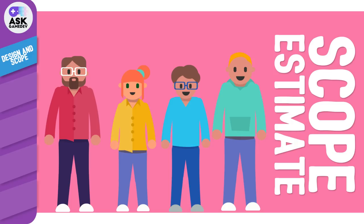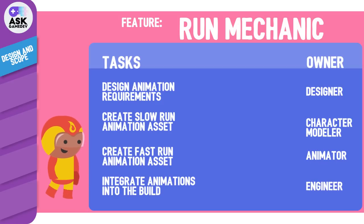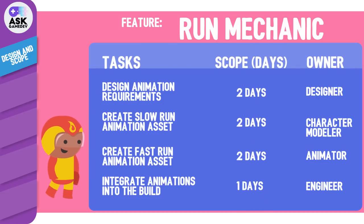For example, let's consider a hypothetical run mechanic for a character. A designer, a character modeler, an animator, and an engineer may all be required to help get the character to run in engine, and we would make estimates for each discipline's participation in man days. Estimates are a best guess and are often revisited throughout development. You'll want to repeat this estimation process for all features in your game, grouping tasks so you can see the relative time costs of each major feature. Once complete, you have defined your project scope.